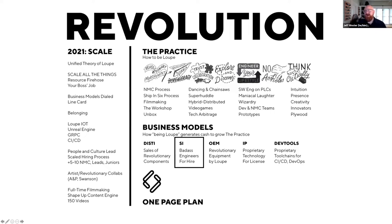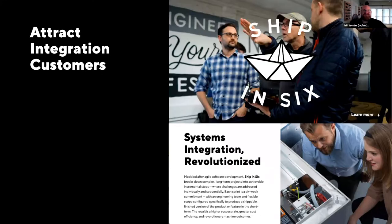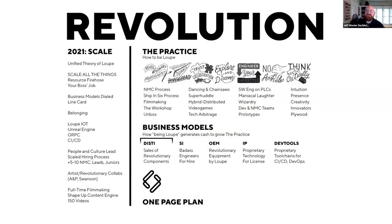We've already been doing work answering the question: for people looking for systems integration, how can they buy that from Loop? Loop Industries is this big multi-disciplinary team of offerings, but if someone just wants systems integration — how do they know they can buy that from Loop? One of the first ways we dug into this was around the 'Ship in Six' web page, highlighting that part of the work so people can engage through that business model.